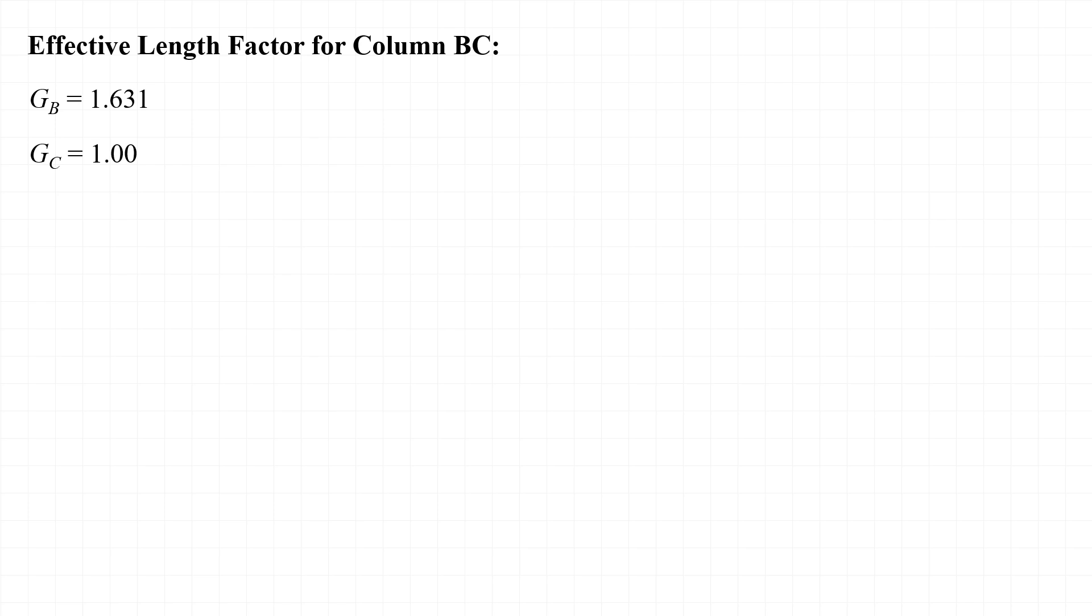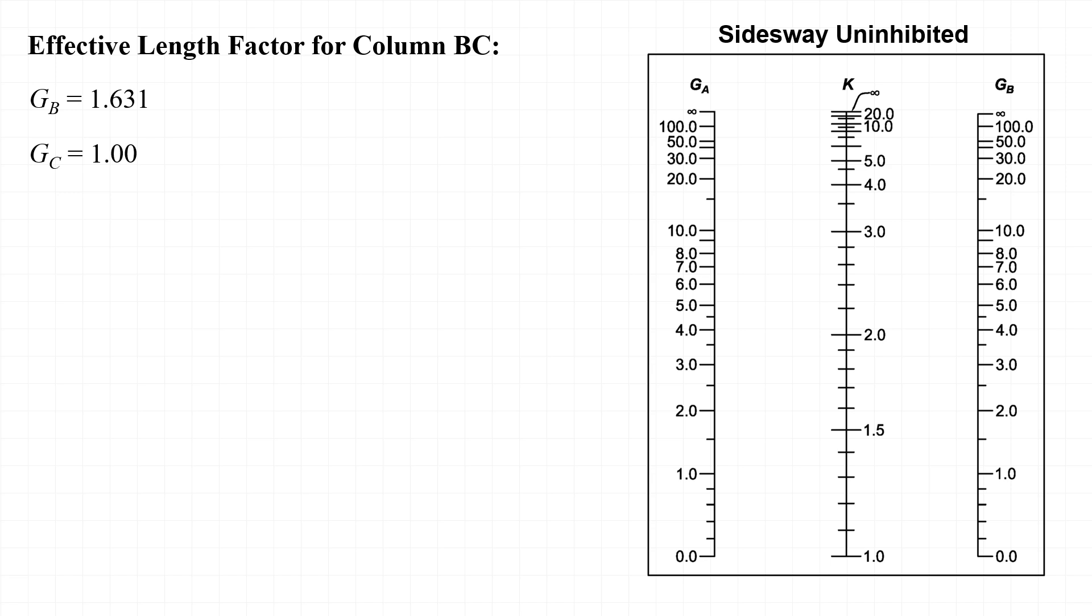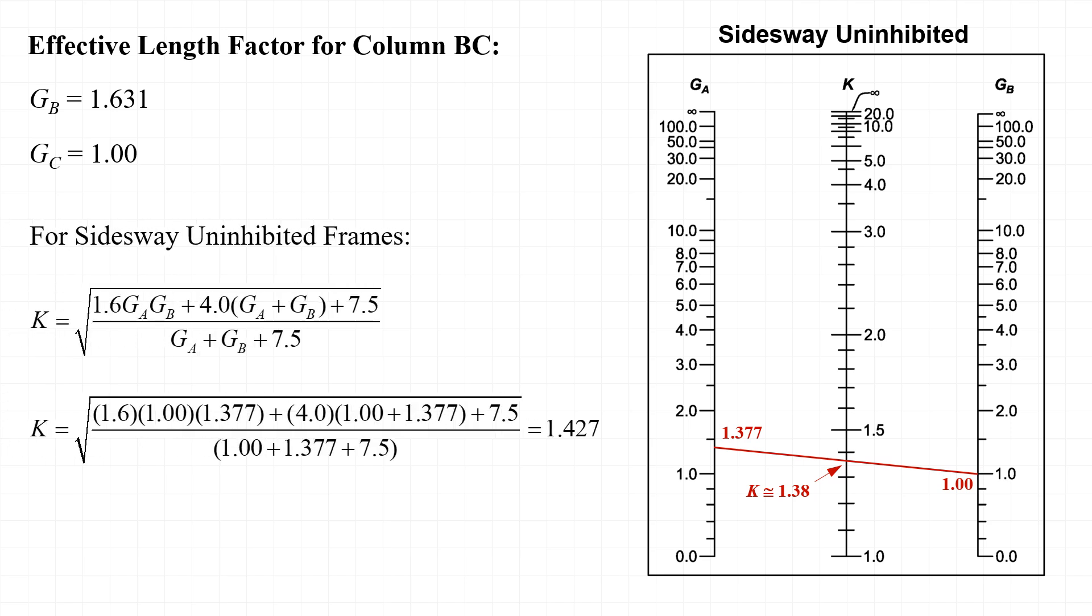Similarly, with G sub B and G sub C equal to 1.631 and 1.0 respectively, we can now determine the effective length factor for column BC. Using the alignment chart by drawing a straight line from 1.377 on one side to 1.0 on the other side, we can see that K is approximately equal to 1.3 or 1.4 based on where that line crosses the center axis. Alternatively, we can use the equation to calculate K and in this case find that K is equal to 1.427. I'll use K equal to 1.427 later on in the example when I calculate the strength of this column.